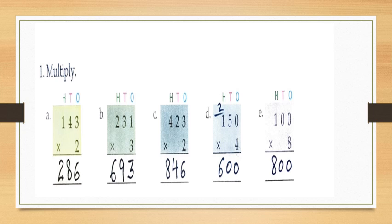Look at the first part: one hundred and forty three multiply by two. First multiply the ones by two — that is three into two is six. Write six under ones. Then multiply the tens by two — that is four into two is eight. Write eight under tens. Now multiply the hundreds by two — that is one into two is two. Write two under hundreds. So your answer will be two hundred and eighty six.